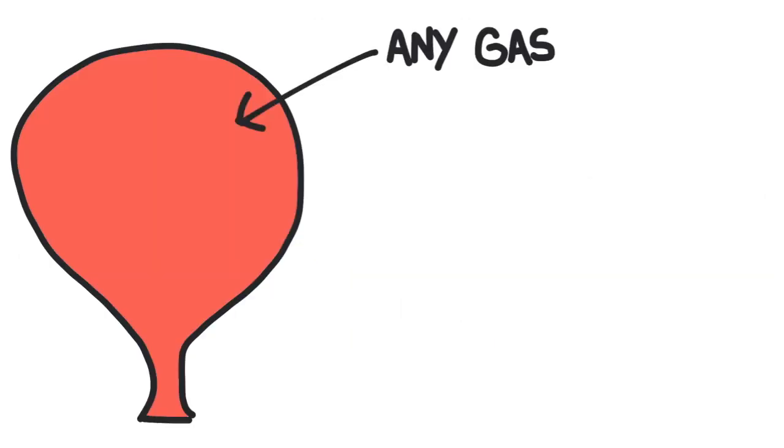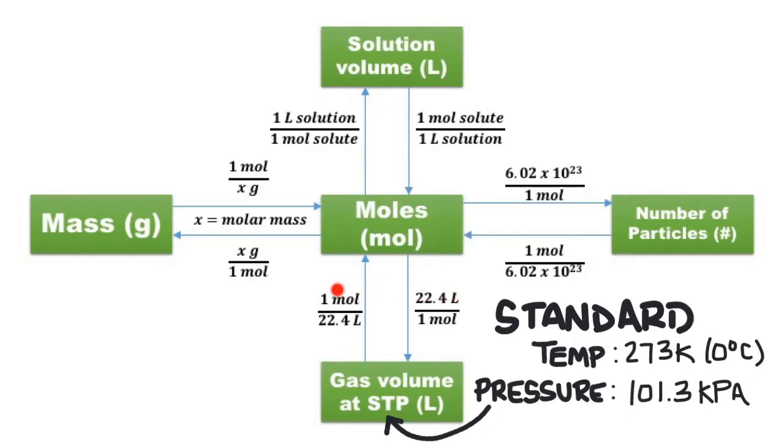It doesn't matter what kind of gas we are talking about, 1 mole of any gas at STP will occupy 22.4 liters of space. To convert from moles to liters of a gas, we will use a conversion factor that will cancel the unit of moles and leave us with the unit of liters.